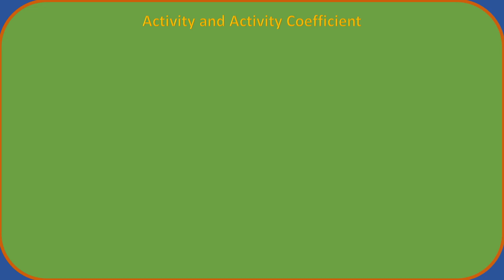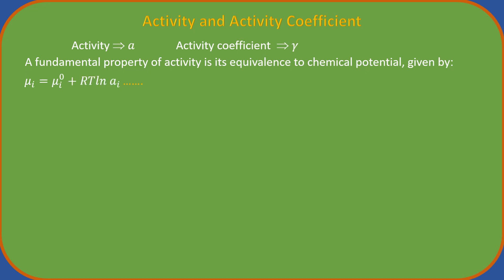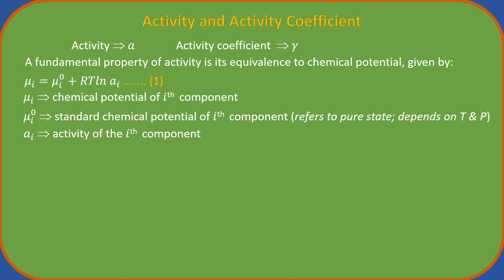Activity is denoted by lowercase letter a, and the activity coefficient is denoted by the lowercase Greek letter gamma. A fundamental property of activity is its equivalence to chemical potential, this is given by the following equation. Sir, could you please explain the term chemical potential?